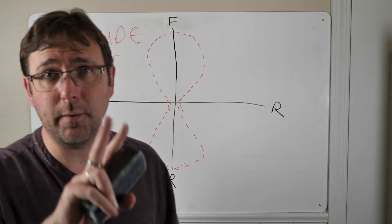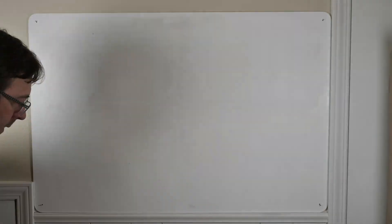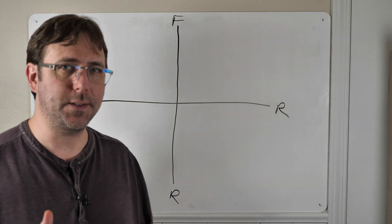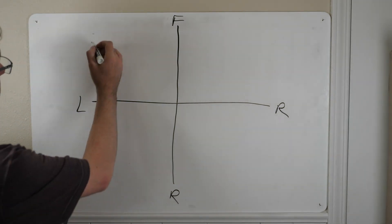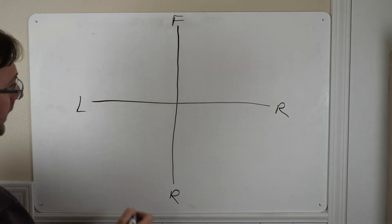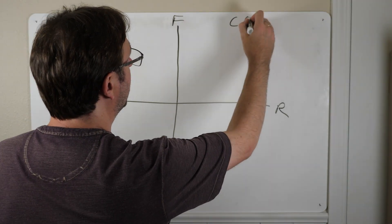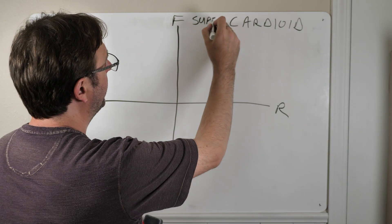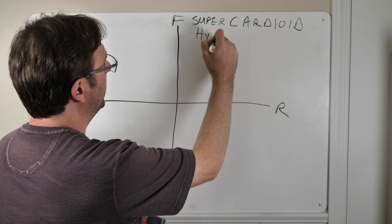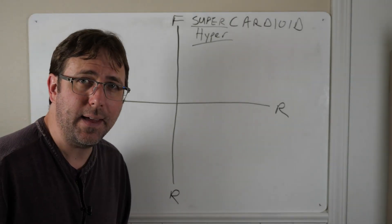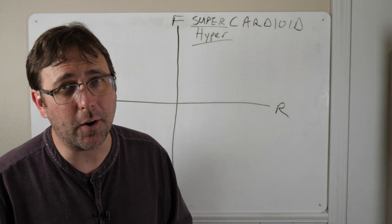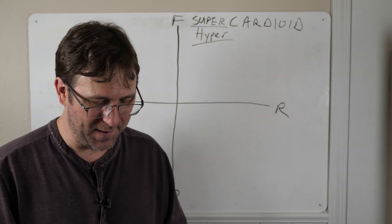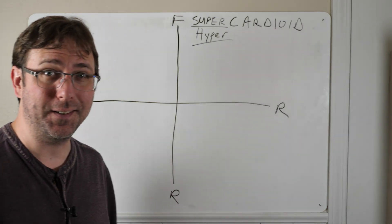Two more I want to talk about real quick. We'll talk about them together. And these are two more variants on the cardioid pattern. We have a super cardioid and a hyper cardioid. Now these take that kind of heart shaped cardioid pattern and kind of deform it a little bit. They pick up some strengths and weaknesses along the way.